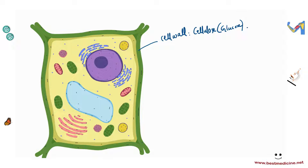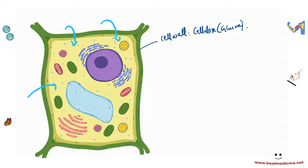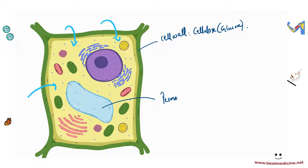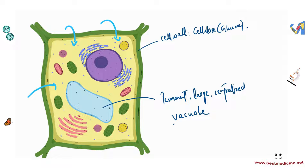If a lot of water was to move into an animal cell it would just burst, but a plant cell will just become turgid. The cell wall gives support and strength to the plant cell and maintains its regular shape. Next, plant cells also have a large, permanent, centralized vacuole. A vacuole is an area that contains water and dissolved materials such as enzymes, nutrients, and waste products.